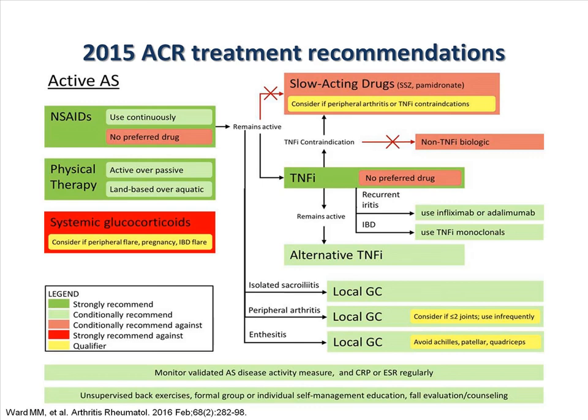These are the 2015 American College of Rheumatology treatment recommendations for ankylosing spondylitis. In patients with active ankylosing spondylitis, it is strongly recommended to use non-steroidal anti-inflammatory agents continuously when they have active disease. If the disease remains active, it is recommended that patients move on to TNF inhibitors. If disease remains active on one TNF inhibitor, it is suggested to switch to an alternative TNF inhibitor. For patients with peripheral arthritis or enthesitis, doctors can inject local glucocorticoids, but should avoid injecting local steroids into the Achilles, patellar, or quadriceps tendons.